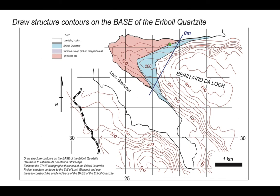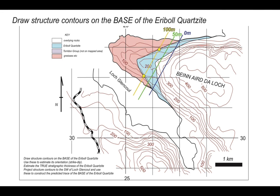Now let's work higher. The green blob marks where the base of the Arable Quartzite intersects the 50-meter topographic contour. We find another intercept on the southwest side of the peninsula, join them up, and create the 50-meter structure contour. Similarly, we find the intercepts at 100 meters on both sides and join them up. Finally, we find the intercept of the 150-meter topographic contour with the base of the quartzite and join those up to create the 150-meter structure contour.